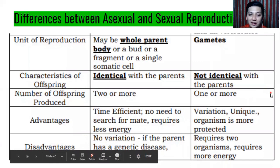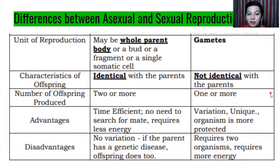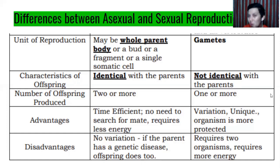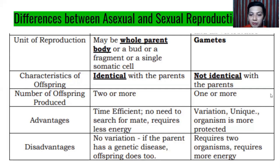Advantages of asexual reproduction: it is time-efficient, no need to search for a mate, and requires less energy. Advantages of sexual reproduction: it produces variation, uniqueness, and organisms are more protected. Disadvantages of asexual reproduction: no variation — if the parent has a genetic disease, all offspring of the next generation will have that disease. Disadvantages of sexual reproduction: it requires two organisms and more energy.